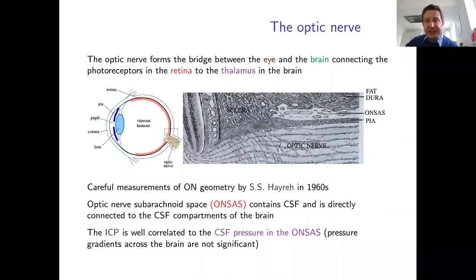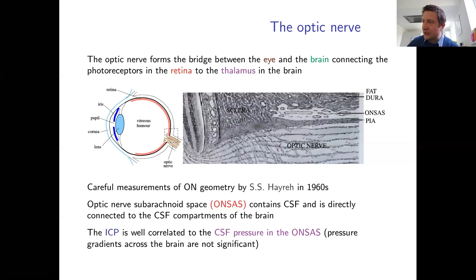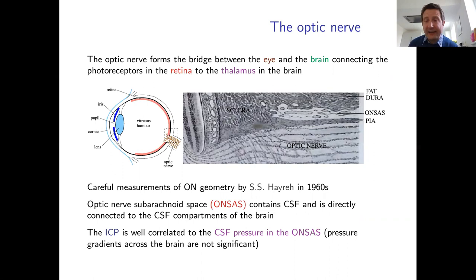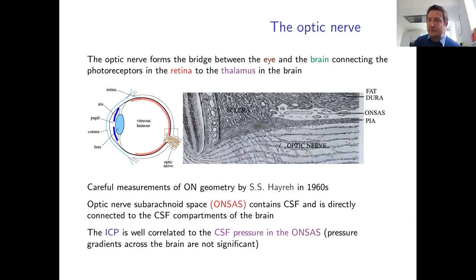The meningeal region surrounding the optic nerve is essentially the same as the meningeal region around the brain, and in particular it contains a subarachnoid space analogous to that around the brain. There is a layer of fluid — the cerebrospinal fluid — all around the outer surface of the optic nerve in what is called the optic nerve subarachnoid space (ONSAS). There is a direct connection between this CSF and the CSF surrounding the brain.